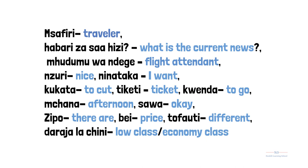'Ninataka', I want. 'Kukata tiketi', to buy a ticket. 'Kwenda', to go. 'Mchana', afternoon. 'Sawa', okay. 'Zipo', they are. 'Bei', price. 'Tofauti', different. 'Daraja la chini', low class or economy class.